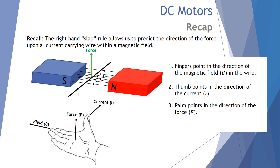Let's get on with today's video. You'd recall previously the right-hand slap rule: when a wire with current is positioned perpendicular to a magnetic field, we can predict the direction of the force. Your thumb is placed in the direction of the current, your fingers in the direction of the magnetic field moving from north to south, and the palm generates the direction of the force.